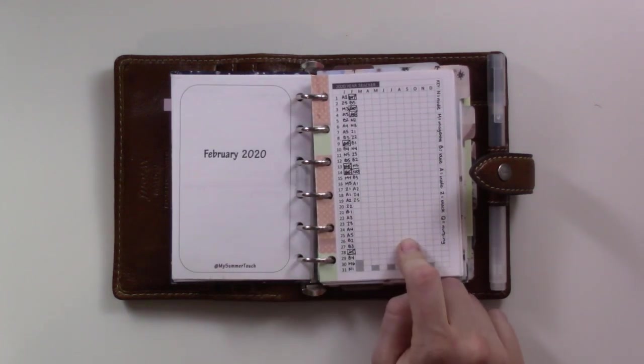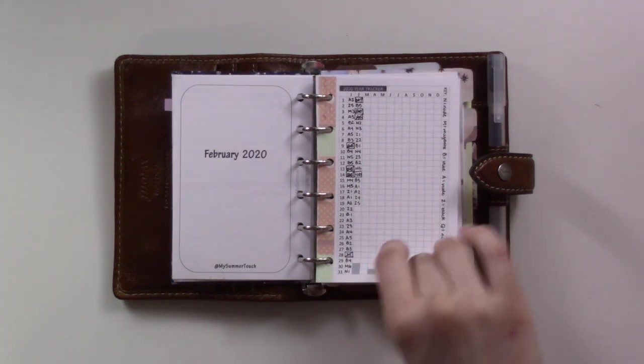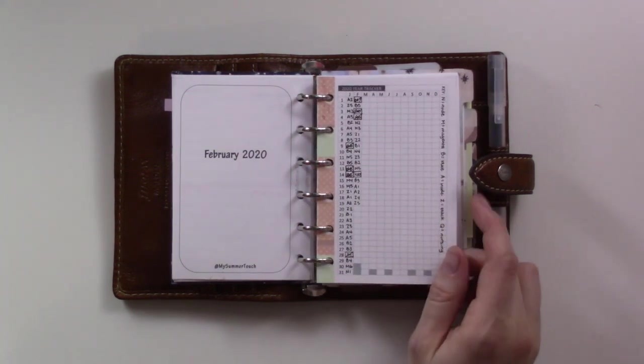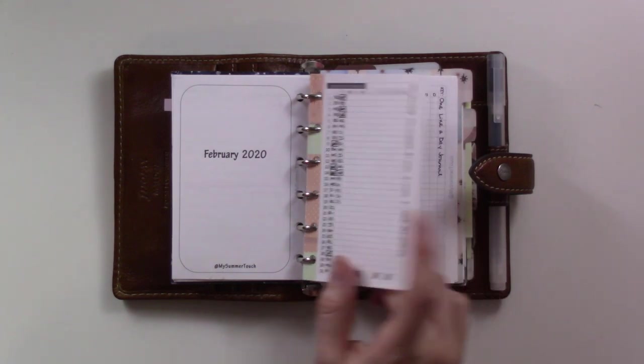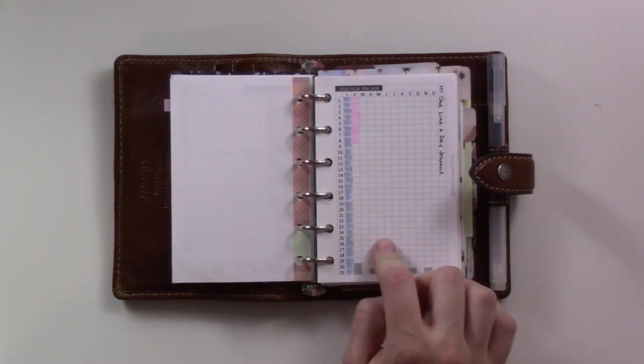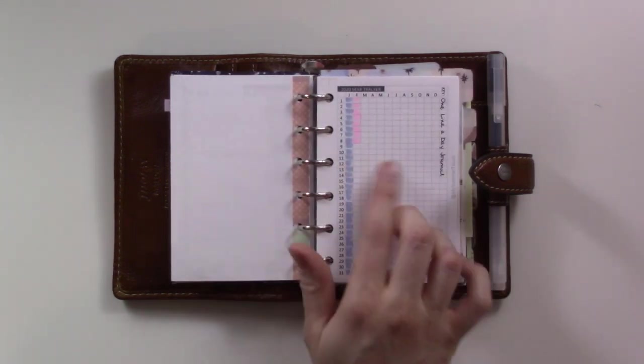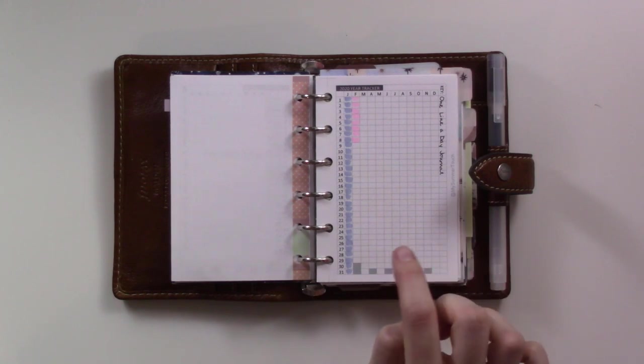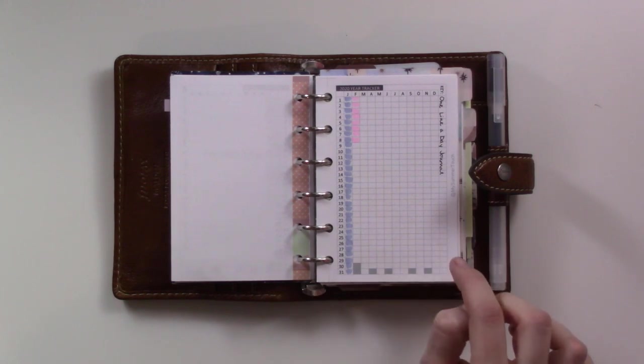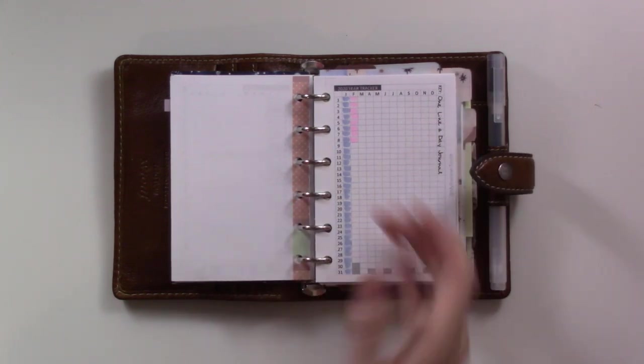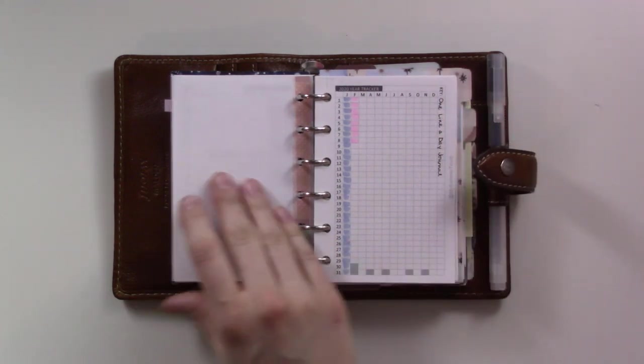I use this to keep track of when I need to wash my bras. This is one of the things I try to make sure at a bare minimum I fill out every day or two. Both of these are the same insert from My Summer Touch, the one thing one year tracker. I like that it's just on one page and it has space for a little bit of a key.